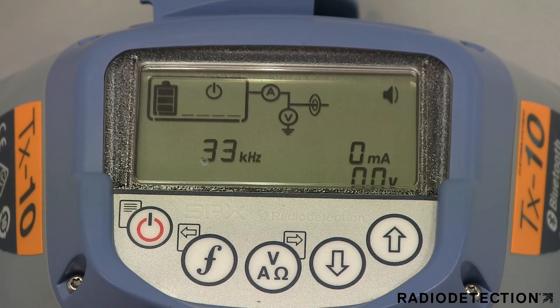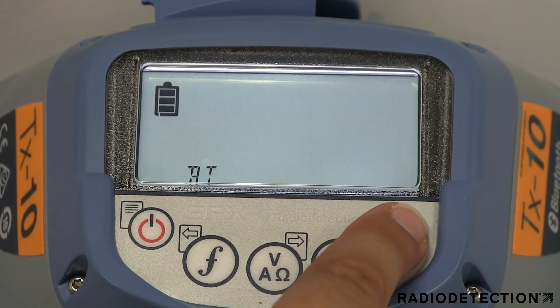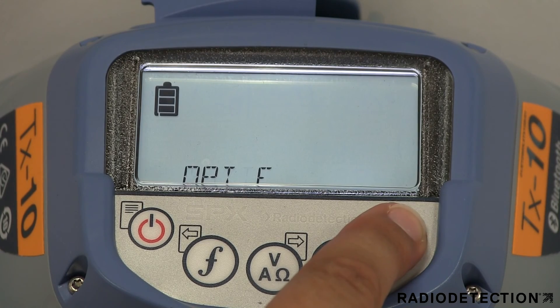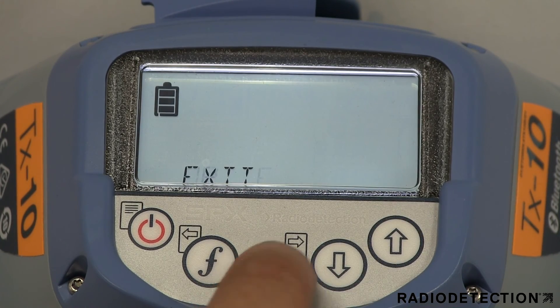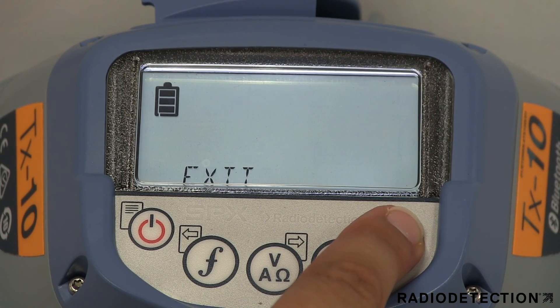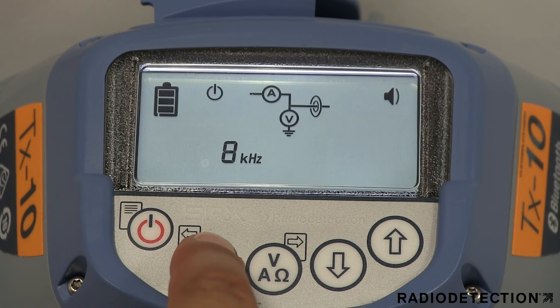The Opt F menu option is only available when the direct connection leads are connected. This menu option has two options: start or exit. By selecting start, the transmitter will automatically optimise the frequency output to the application it is being used for. This feature is useful for beginners or anyone who isn't sure on the best frequency to apply to the utility you are trying to locate.